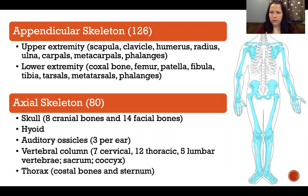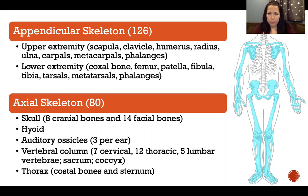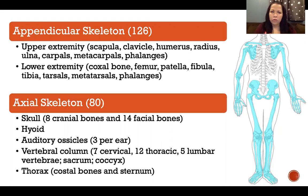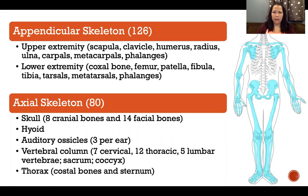The white part is axial and the blue part is the appendicular skeleton. You might have to look at this PowerPoint later on to see the whole picture if you're unclear here. The appendicular skeleton includes 126 bones, and those are all the bones of the extremities — appendicular as in appendage. The axial skeleton has 80 bones and includes all of the bones that make up the trunk, head, and neck — the midline of the body.